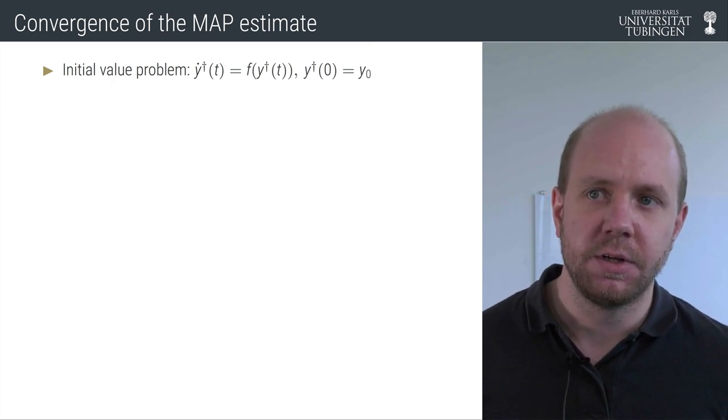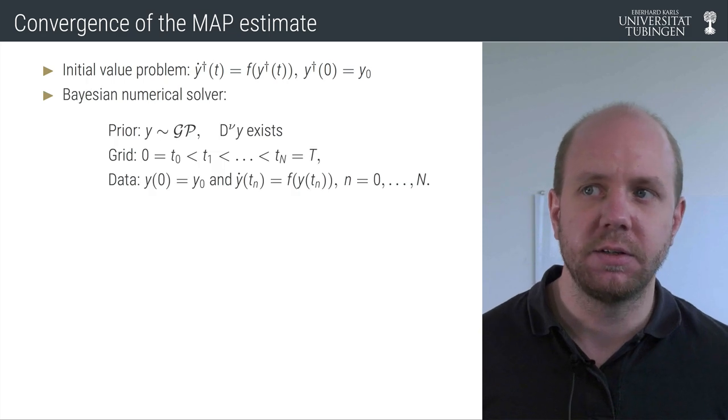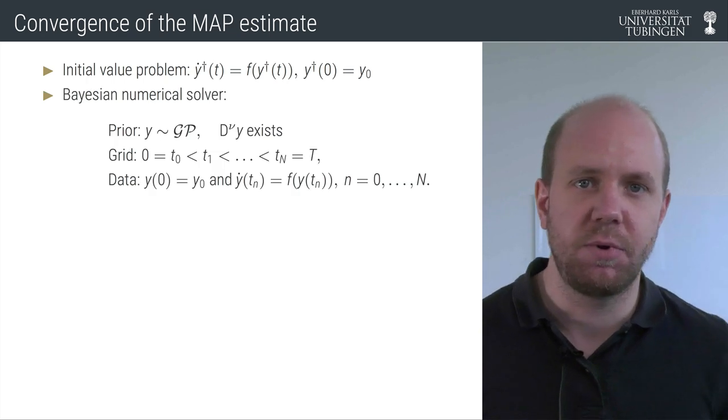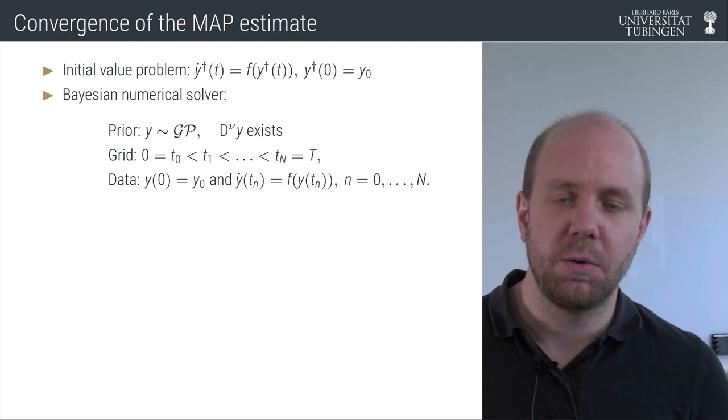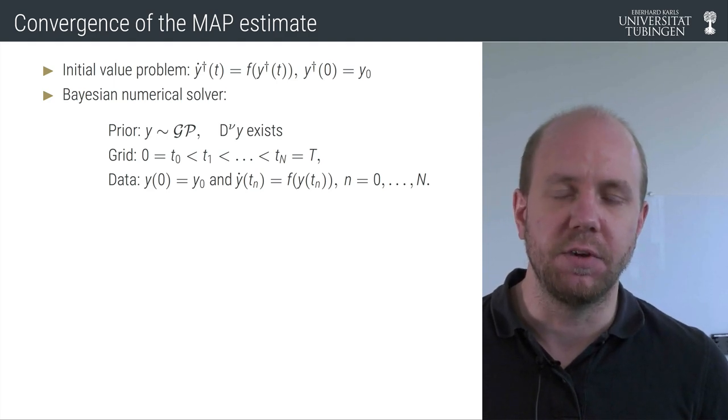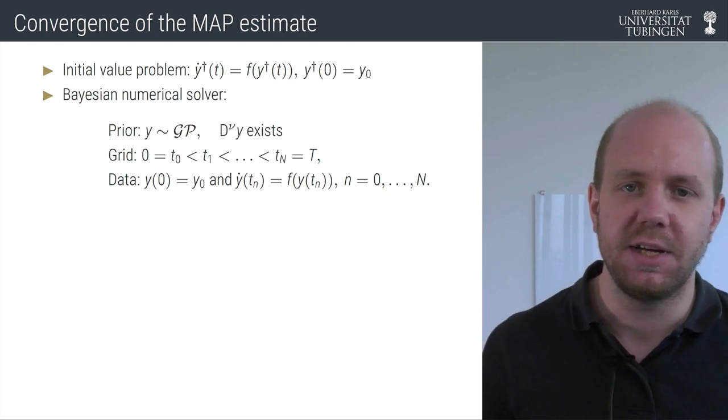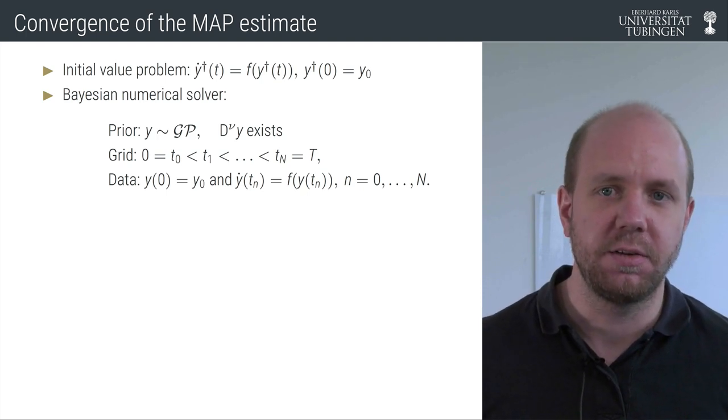The way we solve this problem in a Bayesian way is that we define a Gaussian process prior y which is assumed to have nu derivatives, and then we need some data.